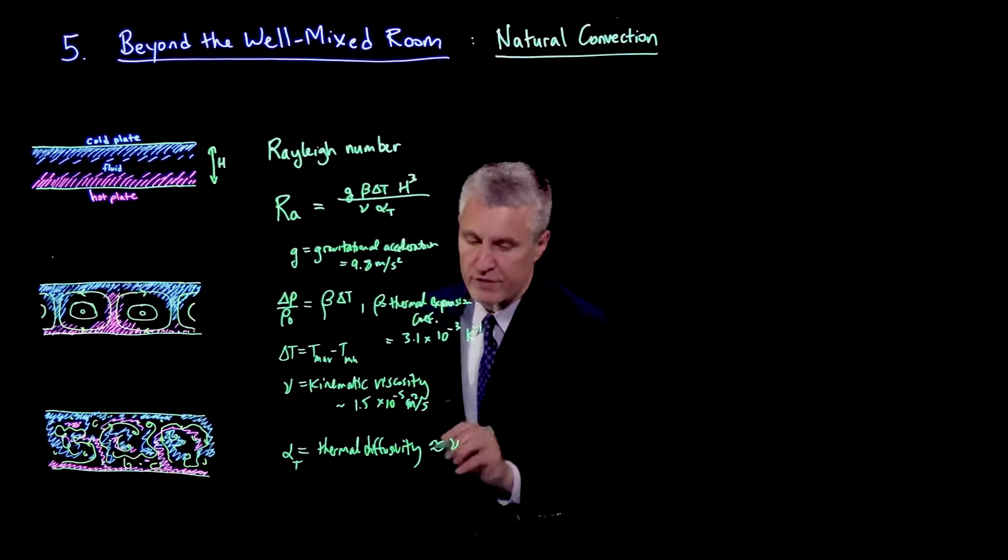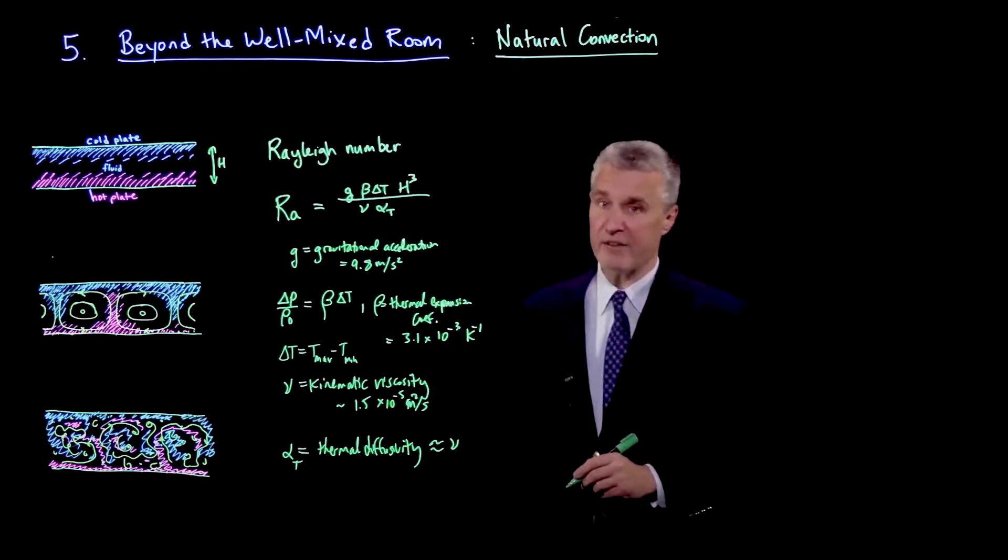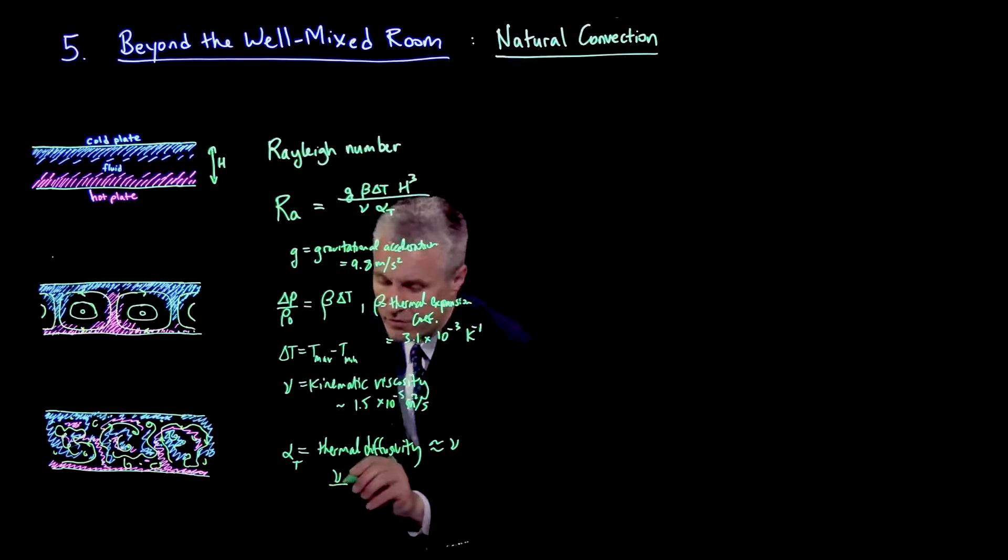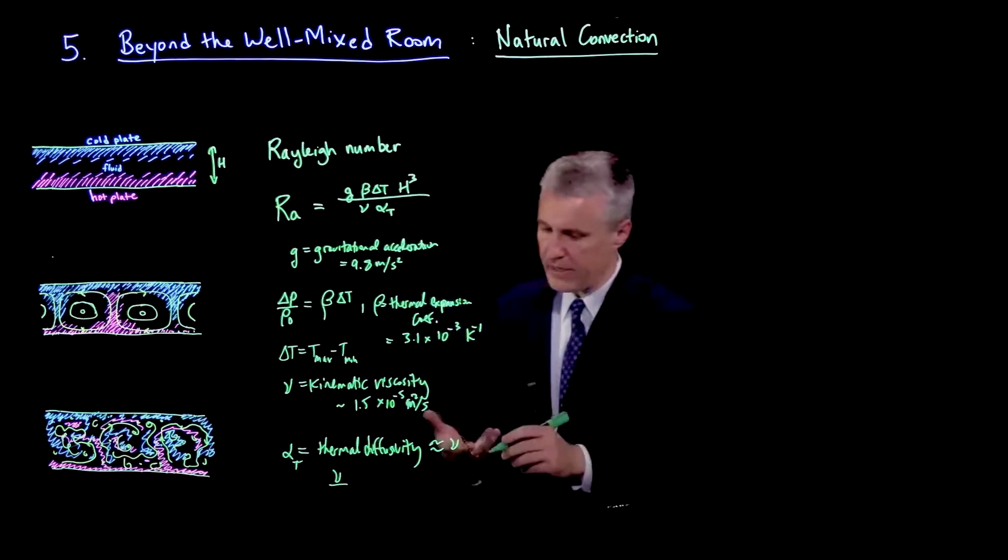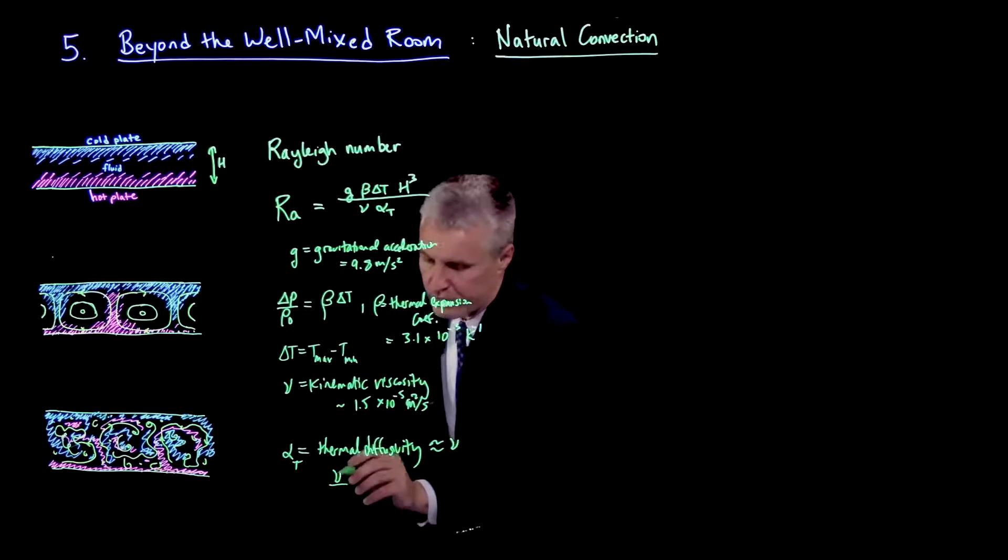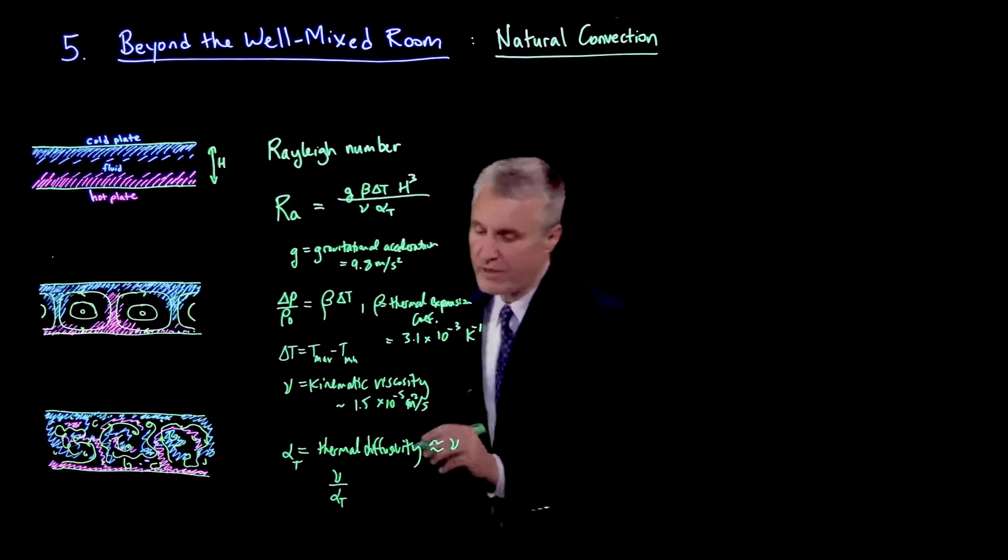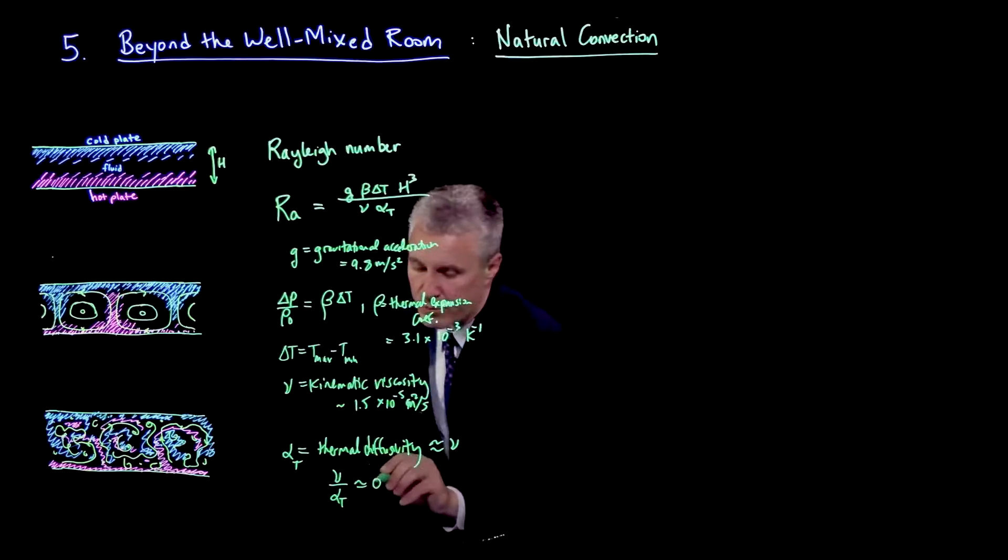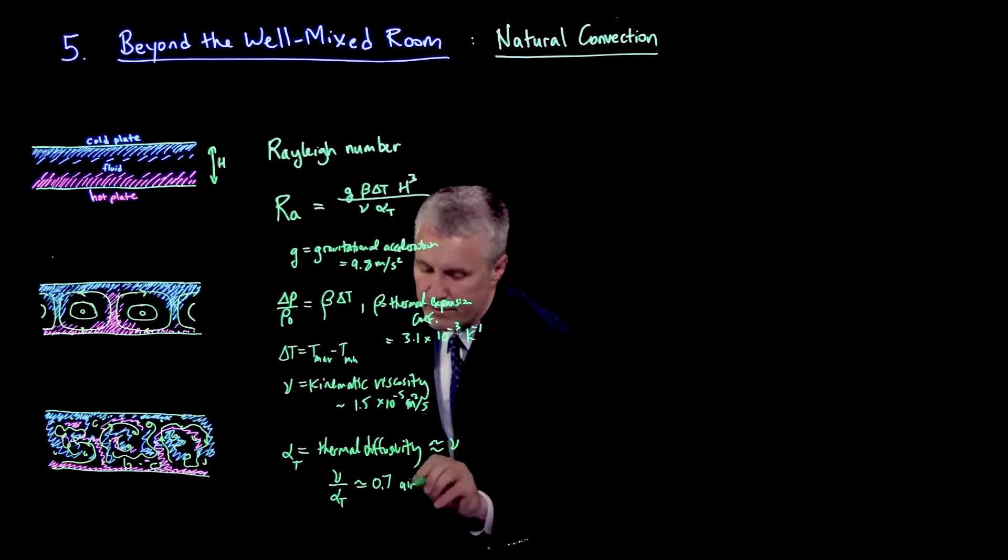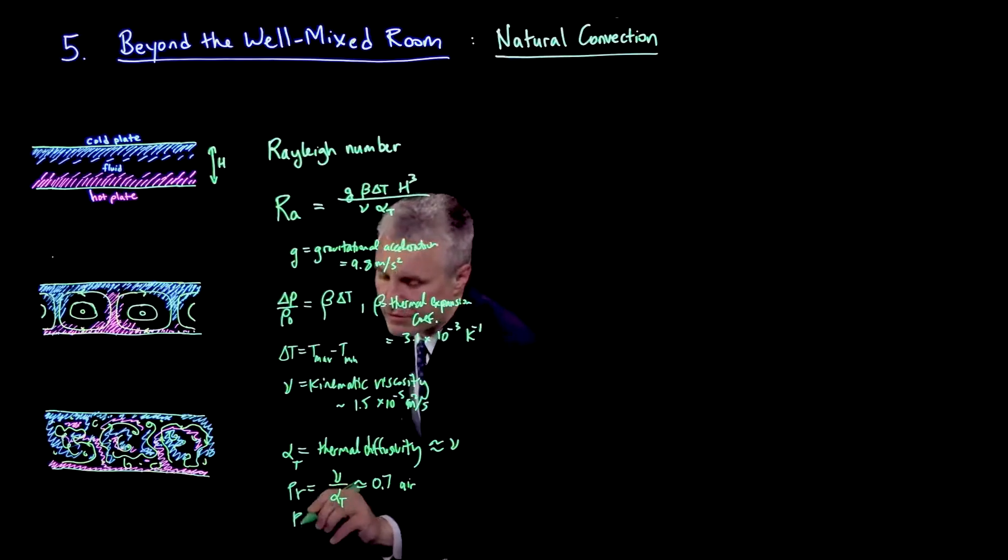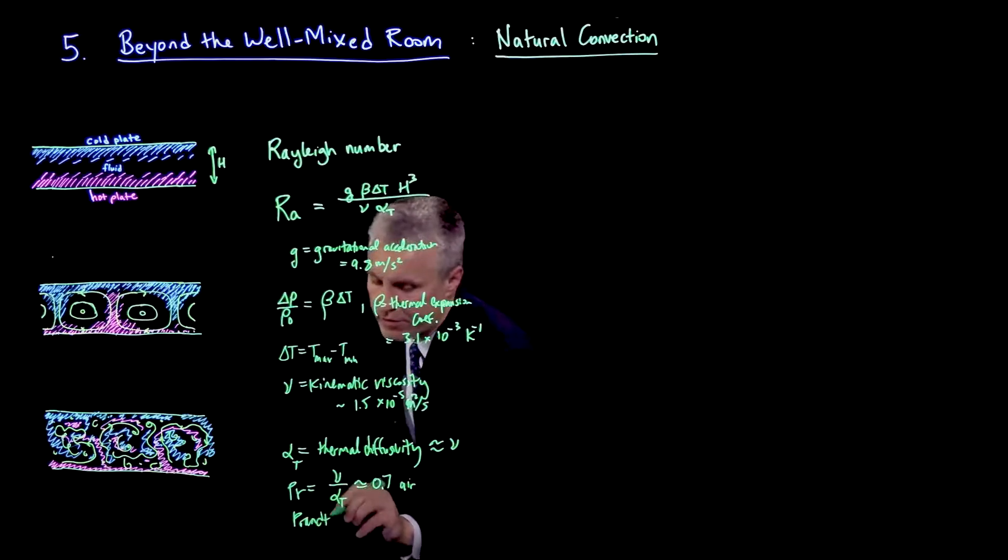Thermal diffusivity turns out is pretty close to the kinematic viscosity for a gas like air. The ratio of the kinematic viscosity to the thermal diffusivity for air is around 0.7. And this ratio is called Pr, the Prandtl number, which is also very important in these sorts of flows.